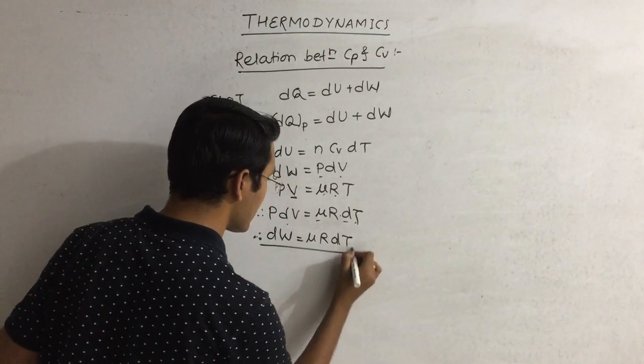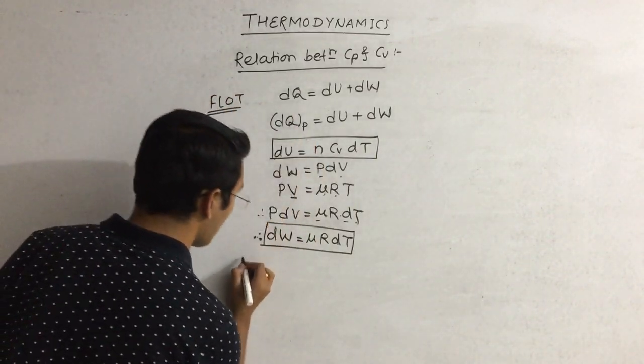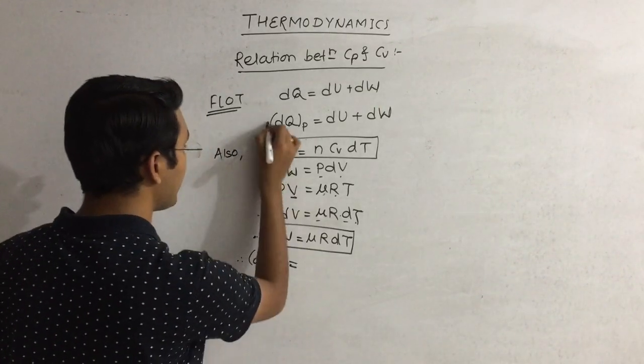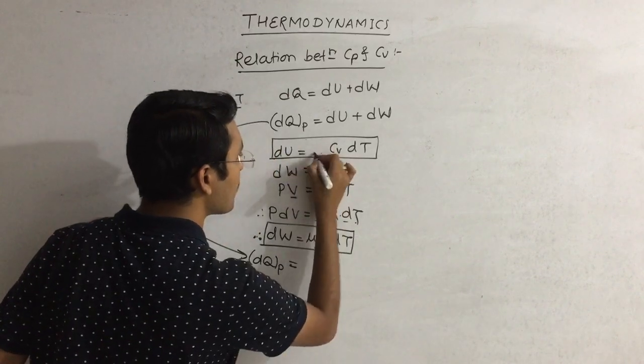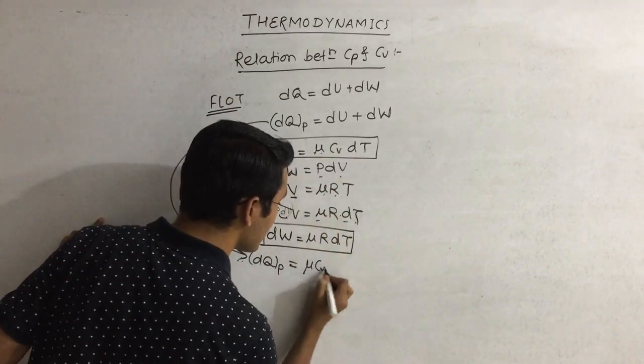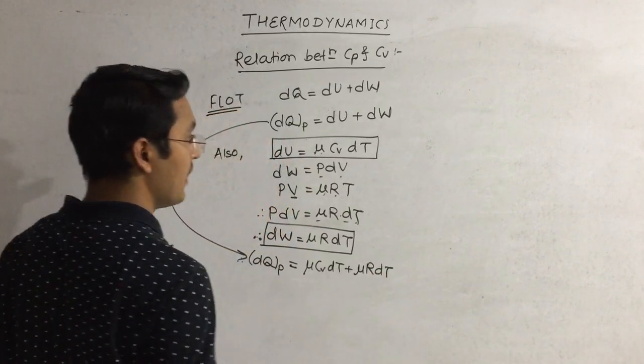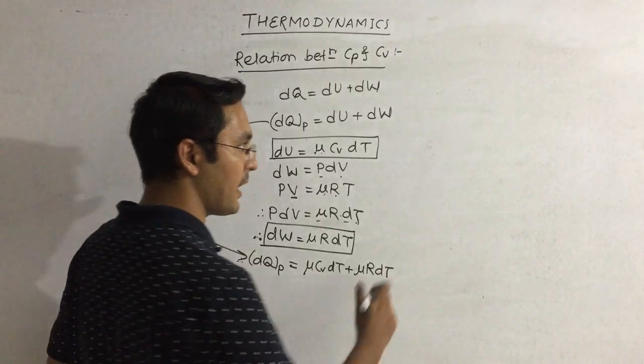So this is the formula for dw, this is the formula for du. Therefore dqp becomes n Cv dT plus n R dT.